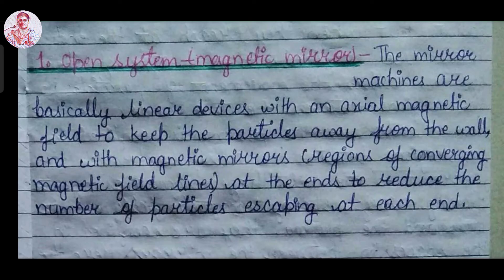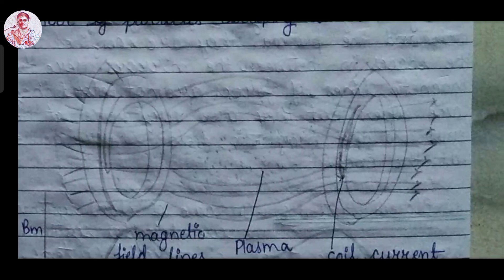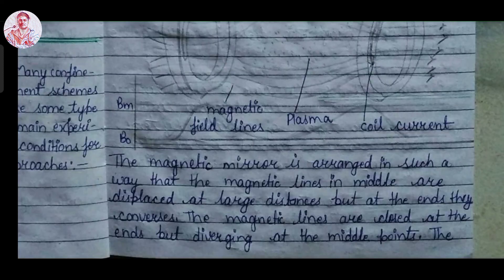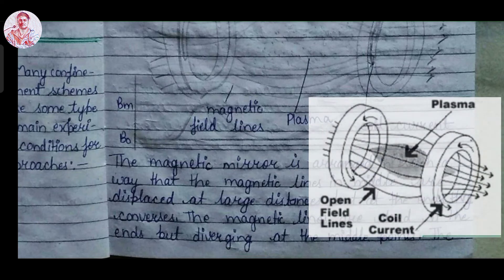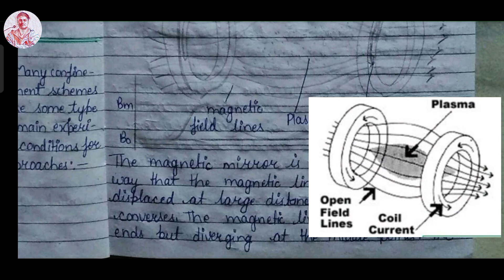First is open system magnetic mirrors. The mirror machines are basically linear devices with an axial magnetic field to keep the particles away from the wall and with magnetic mirrors at the end to reduce the number of particles escaping at each end with the help of converging magnetic field lines. As you can see in the figure, the magnetic mirrors are arranged in such a manner that the magnetic field lines are diverged from the middle end and they converge at the end point.